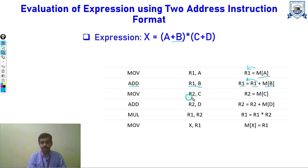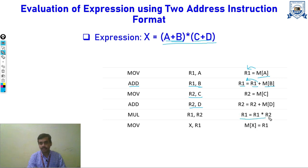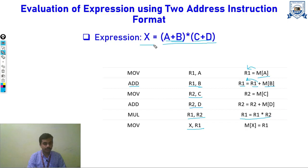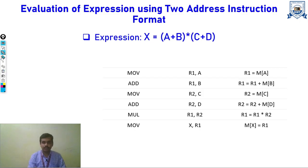For C plus D, we first move C into another register and do the same as for A plus B — add and store the value at R2. At last, to perform multiplication, we have A plus B in R1 and C plus D in R2. We multiply and store the result — R1 multiplied by R2. Finally, we move that register value to the memory location where the result should be stored. This is how we evaluate an expression using the 2-address instruction format.